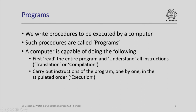We note that a computer is capable of doing exactly the same things that a person is capable of doing while executing a computational procedure — namely, the computer can read the entire program and understand all instructions. This step is called translation or compilation. We shall explain the meaning of these technical terms later, but for now we note that the computer first reads the entire program and understands all instructions. Once it has done that, it carries out the instructions of the program one by one in the stipulated order. This is called the execution of the procedure.